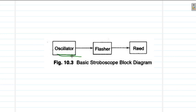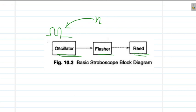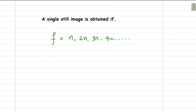The basic working diagram of a stroboscope can be understood like this: it consists of an oscillator, a flasher, and a reed. The oscillator produces fixed-frequency signals and the frequency can be varied. That frequency is fed into a flasher which produces flashing light with n pulses per second, where n depends on the oscillating frequency of the oscillator. The reed is used to calibrate the instrument — it produces fixed-frequency signals at about 7200 Hz and can be used to calibrate the whole instrument.